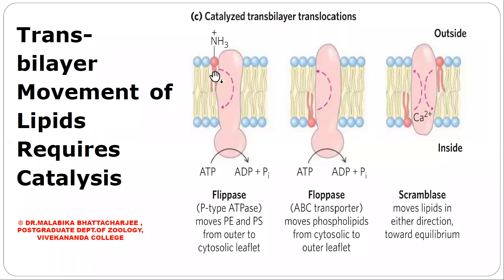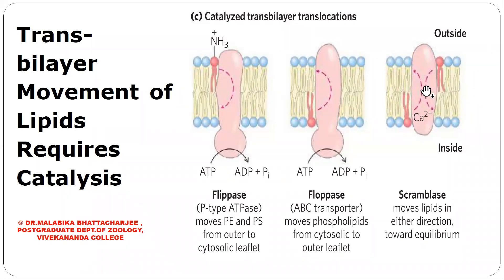Flippase plays an important role in keeping phosphatidylserine restricted to the cytosolic leaflet. Next comes floppase, which moves phospholipids from the inner leaflet to the outer leaflet. Floppase is also an enzyme that uses ATP to move phospholipids from the inner to the outer leaflet. Finally, we have scramblase — an enzyme or protein that moves phospholipids across the bilayer down its concentration gradient. Since movement is down the concentration gradient, it is not ATP-dependent.